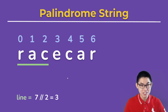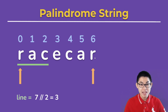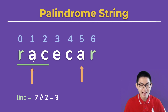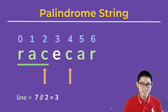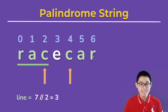Now we're really close to finishing. The last step is to put two arrows — one at the beginning and one at the end — and then we compare the letters. R and R are the same, A and A are the same, and C and C are the same. So once the arrow reaches the end of the line, we know that this string is a palindrome.